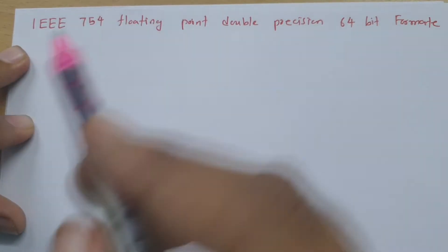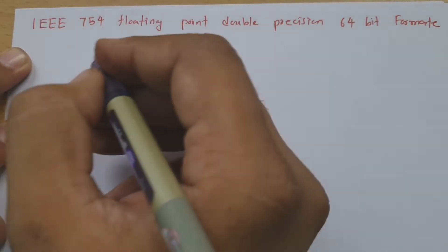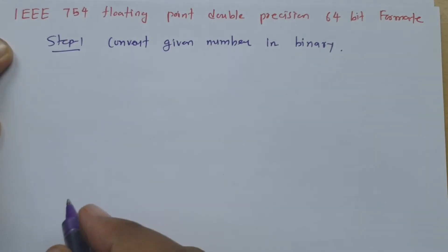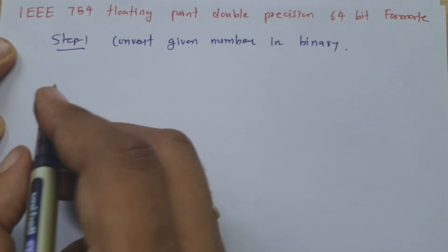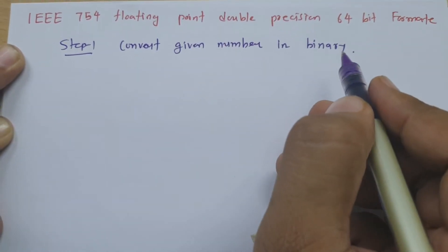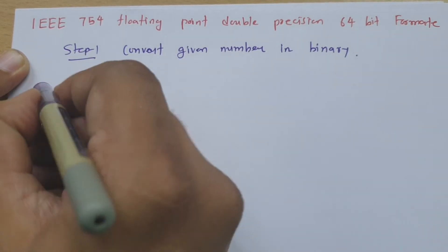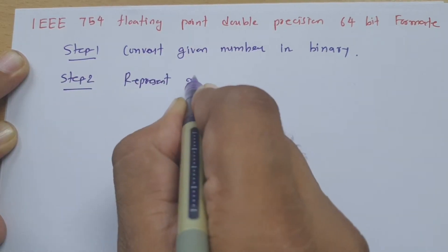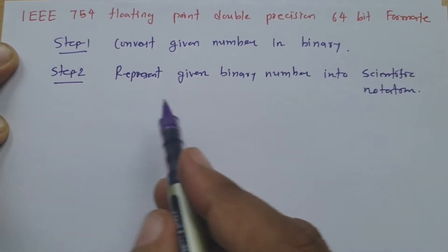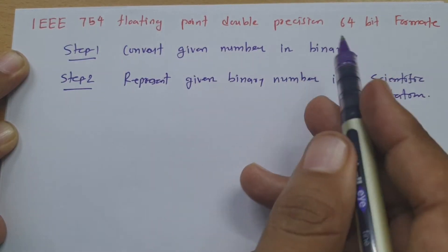The first step is to convert the given number into binary. The next step is to represent the given number in scientific notation. Once you convert the number into binary, represent it in scientific notation. The third step is to place that data into the IEEE 754 Double Precision Format with 64 bits.